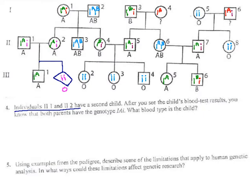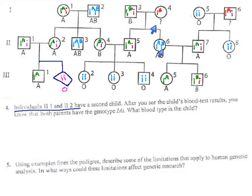Using examples from the pedigree, describe some of the limitations that apply to human genetic analysis. What are some reasons why we weren't able to fill in all the gaps here? One would be that humans tend to have relatively few offspring. A lot of people have zero, one, or two kids, and that isn't enough to do statistical analysis.